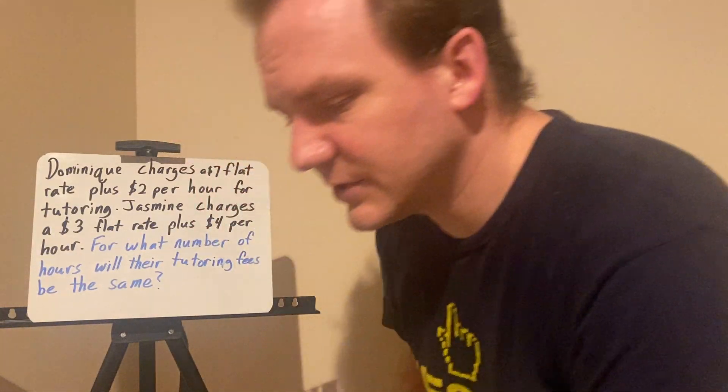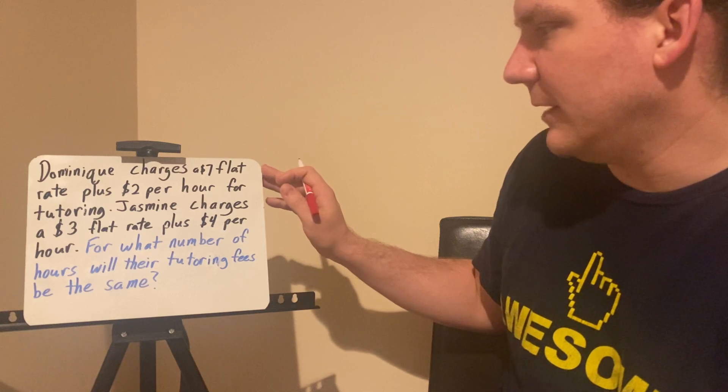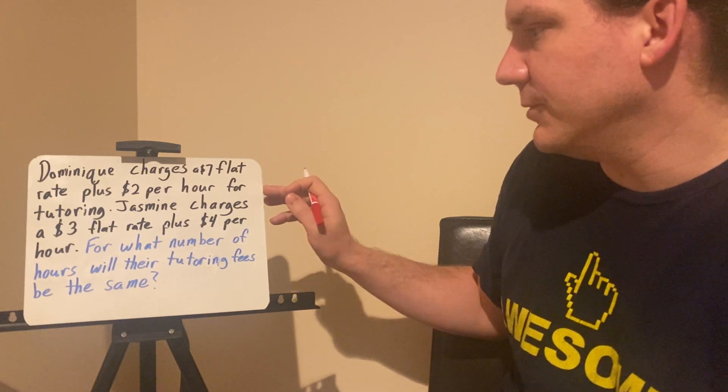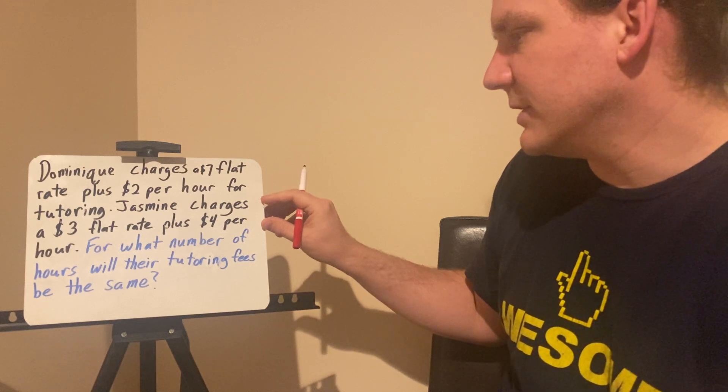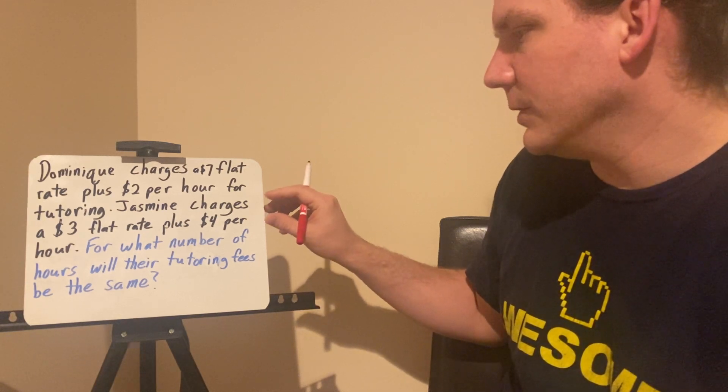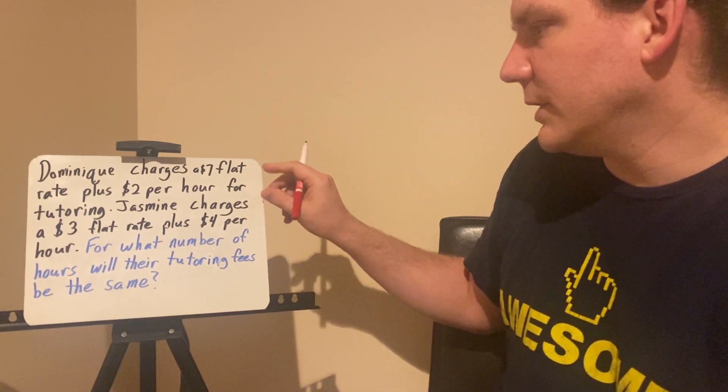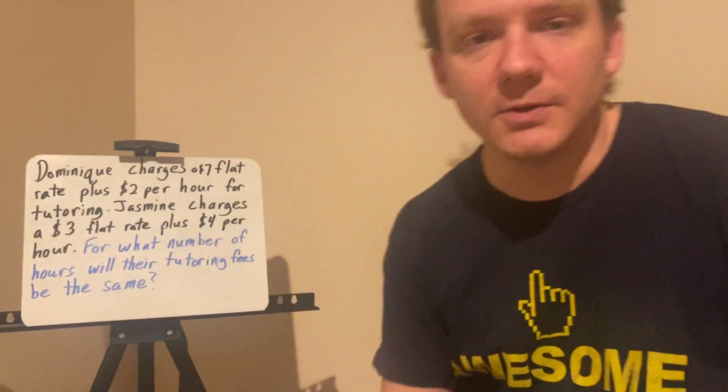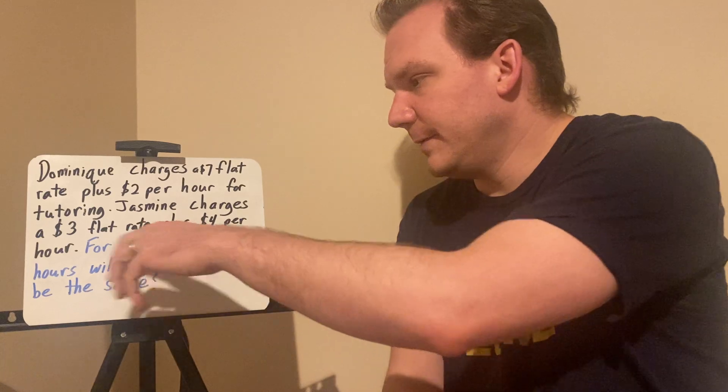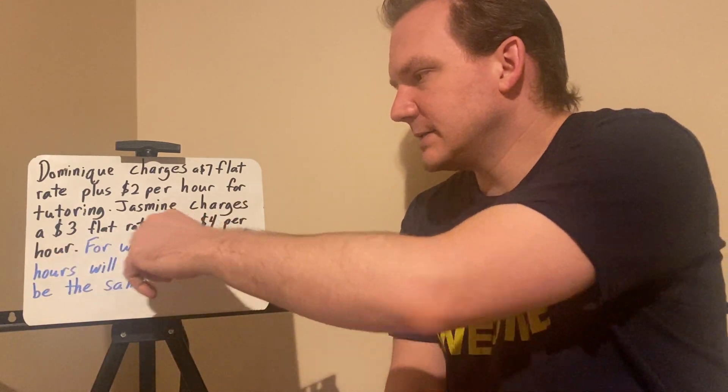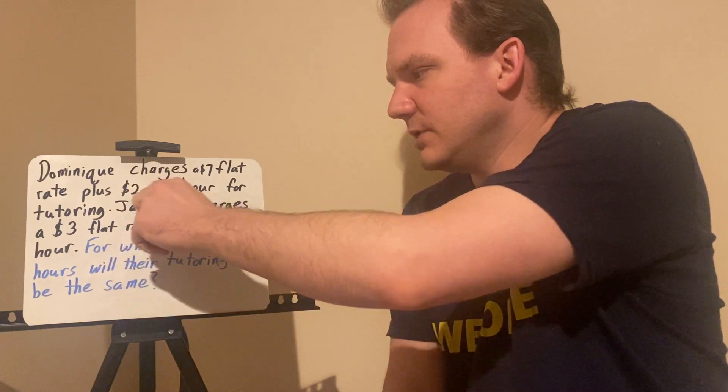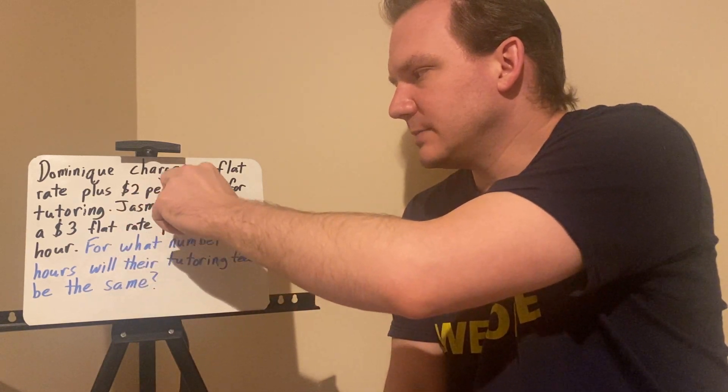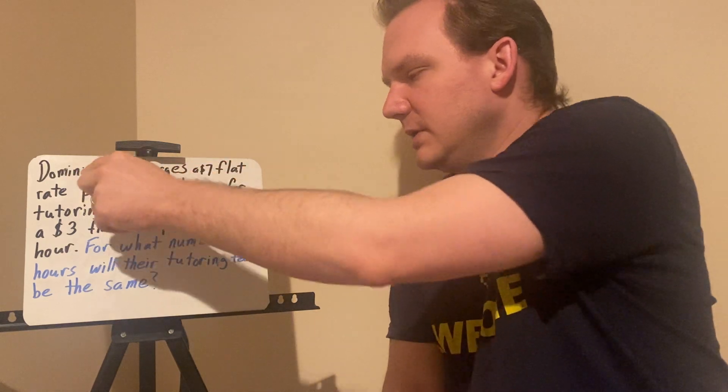So let's have a story. Dominique charges a $7 flat rate plus $2 per hour for tutoring. Jasmine charges a $3 flat rate plus $4 per hour. We would write equations for both Dominique and Jasmine. Those equations are going to be where x equals the number of hours. So 4 times x plus the $3 flat rate is going to be Jasmine.